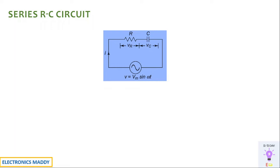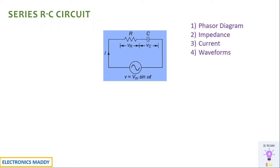We are going to see various parameters such as the phasor diagram, the impedance associated with it, the current, the waveforms associated with a series RC circuit, the power flowing — that is the active power, the reactive power, the power triangle with respect to series RC circuit, and the power factor associated with it as well.